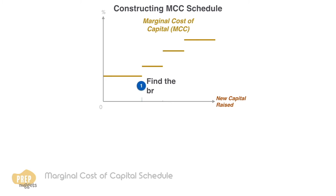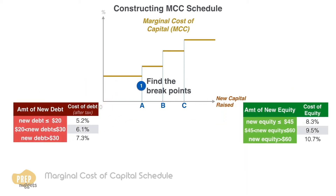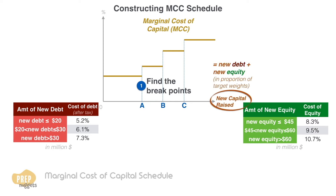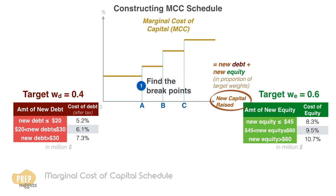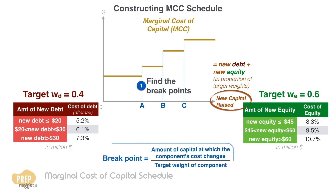The first step is to find the break points in the schedule. To do that, we need to know the schedule of costs for the individual components. These two tables show the cost of debt and cost of equity at different levels of issuance. Assuming the firm does not raise capital through preferred stock, the new capital is the sum of new debt raised and new equity raised in the proportion of the target weights. Let's say the target weight of debt is 0.4 and the target weight of equity is 0.6. We can calculate the break points using this formula.